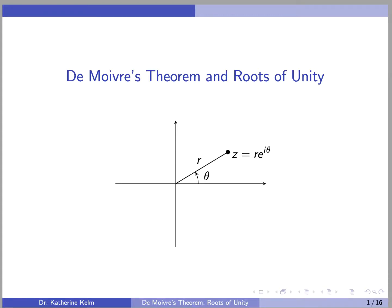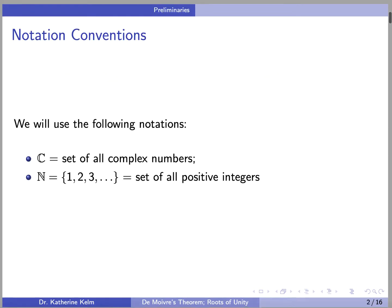This video is about the polar form of complex numbers, de Moivre's theorem, and roots of unity. In this video, we will use the following notational conventions: C stands for the set of all complex numbers, and N will denote the set of all positive integers.